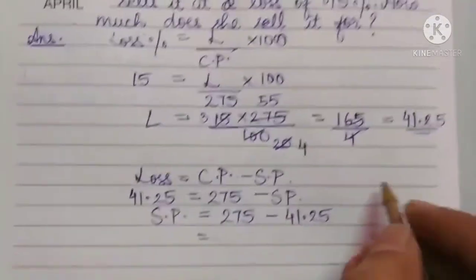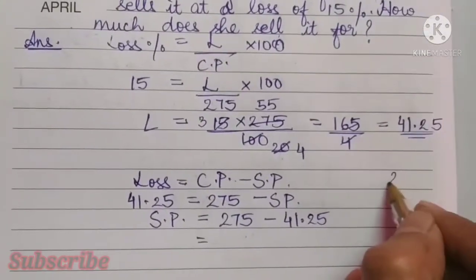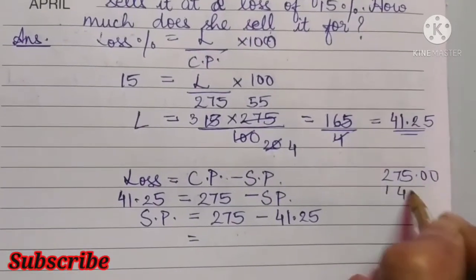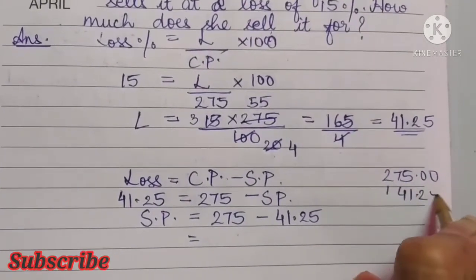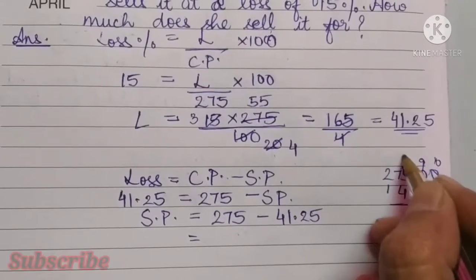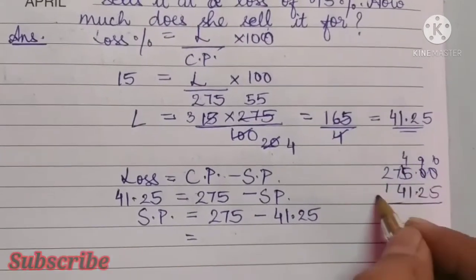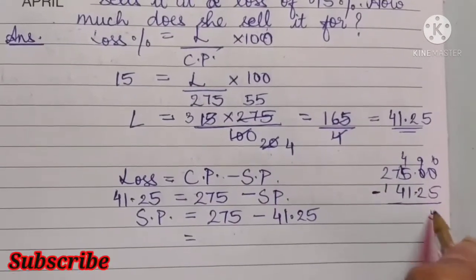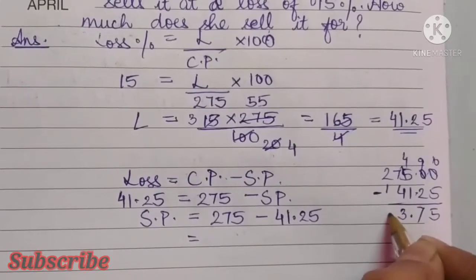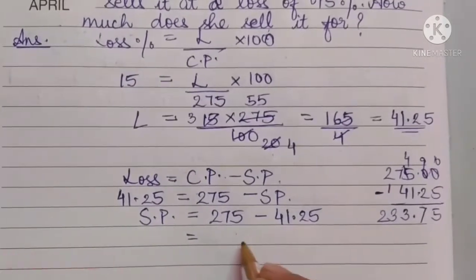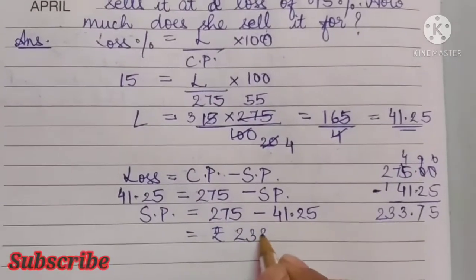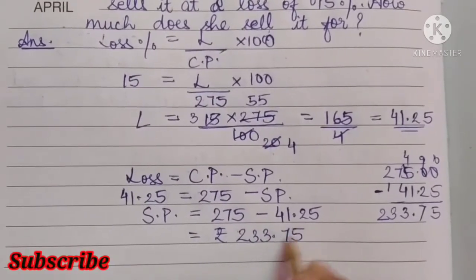That is equal to — calculating: 275 minus 41.25 — we get 233.75. This is the SP, the selling price.